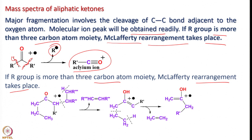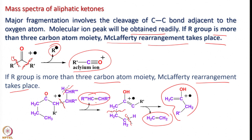Consider this aliphatic ketone. Cleavage can happen here or here, leading to elimination of an ethylene group, and then the next step is again cleavage here and also here. That leads to another ethylene, and we get the substituted ethylene, resulting in the formation of an unsaturated alcohol radical cation. This is the McLafferty rearrangement, provided we have a group with more than 3 carbon atoms. In simpler cases with 2 or fewer carbons on either side of the carbonyl group, acylium ion formation takes place invariably in aliphatic ketones.